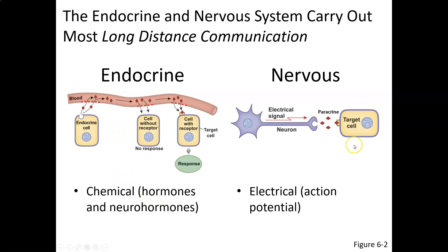The nervous system contributes long distance communication via the action potential, considered an electrical signal. Electricity is really just the movement of ions, so it's the movement of chemicals causing the electrical signal. The action potential is generated at the axon hillock, functionally called the trigger zone, and travels down the axon to the ending where it typically causes release of a neurotransmitter. Some axons — like those going from the spinal cord to the big toe — can be three feet long, making this truly long distance communication.